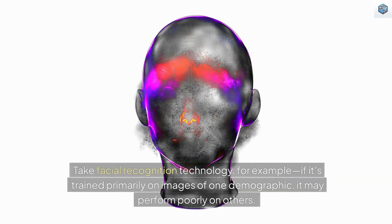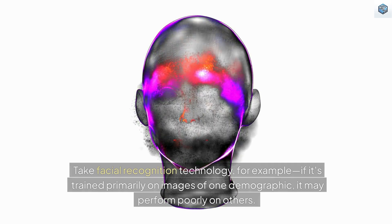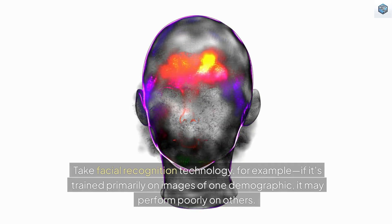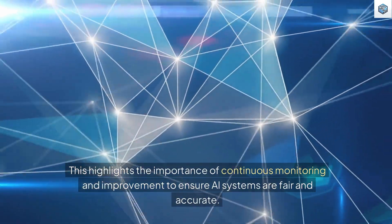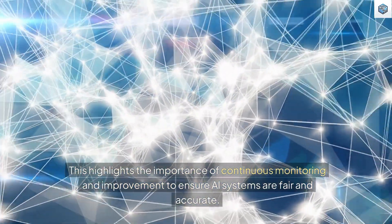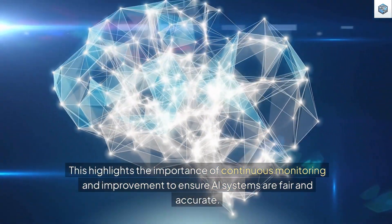Take facial recognition technology, for example. If it's trained primarily on images of one demographic, it may perform poorly on others. This highlights the importance of continuous monitoring and improvement to ensure AI systems are fair and accurate.